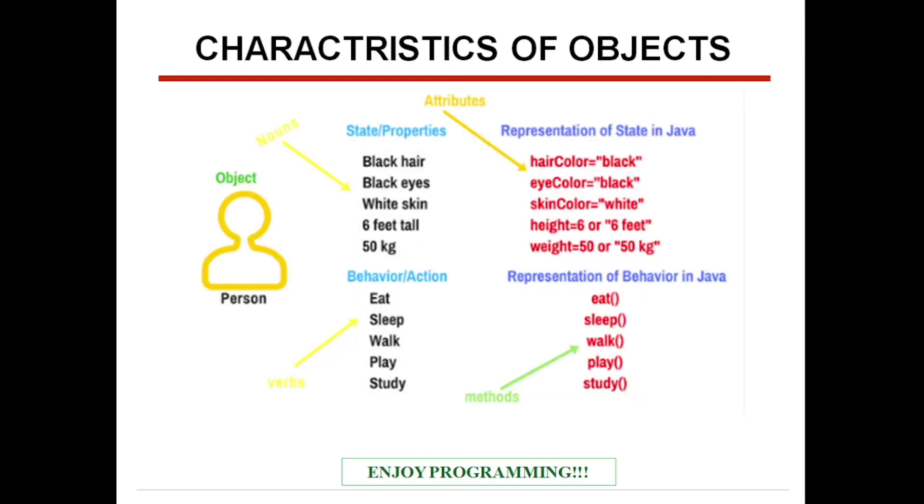Here is an example, person object. The person will have their own properties, which is considered as state, represented as variables. Similarly, the person class, the person object will have their own behavior, which is nothing but actions, represented as methods.